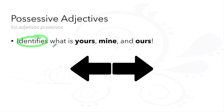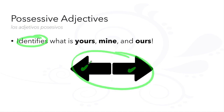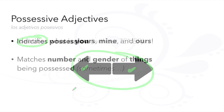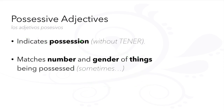Possessive adjectives identify what is yours, mine, and ours. They indicate possession without the use of tener.